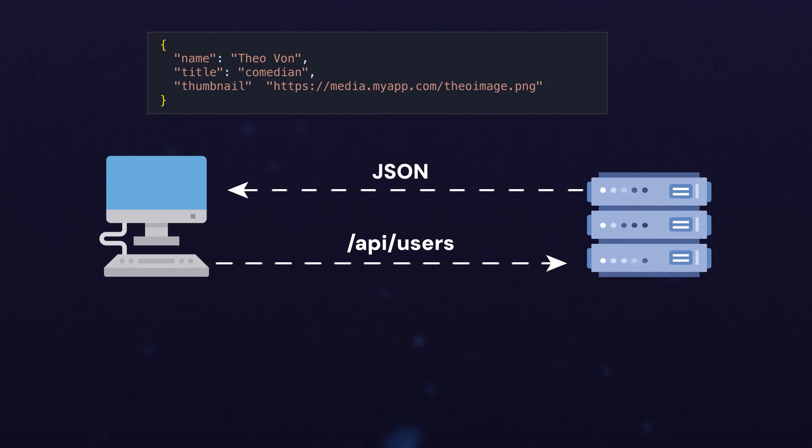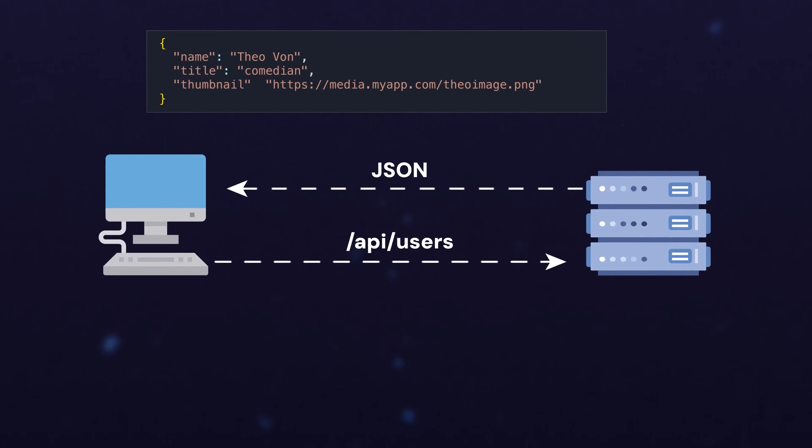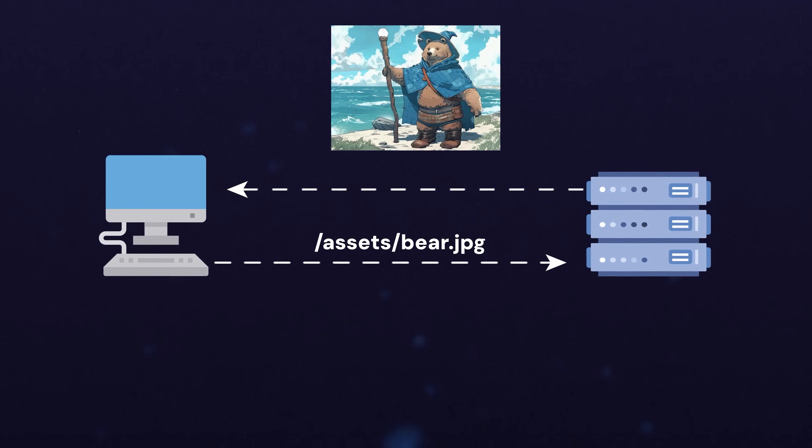As far as web server architecture goes, sometimes the same server that serves the JSON API also doubles as a file server — so slash api slash users returns JSON while slash assets slash bear.jpg returns an image. But sometimes the media server is on a completely different machine, or even a serverless setup using something like Amazon S3, Google Cloud Storage, or Azure Blob Storage to host media assets completely apart from your JSON API.